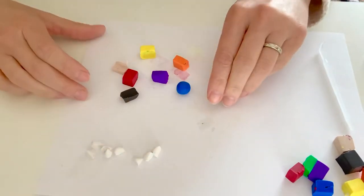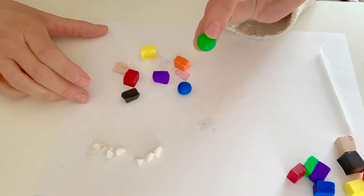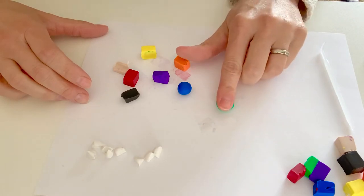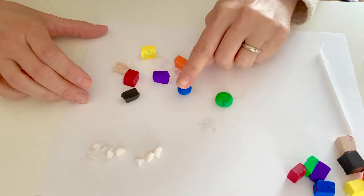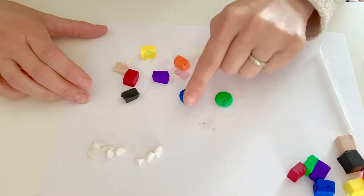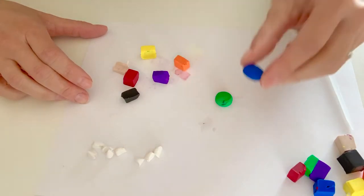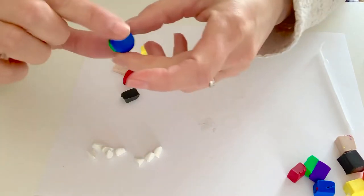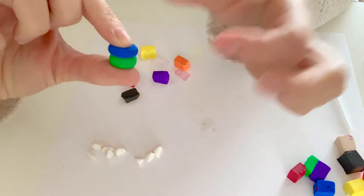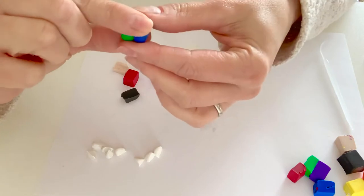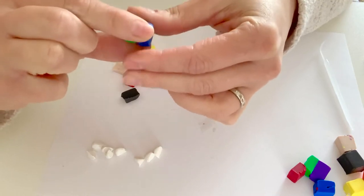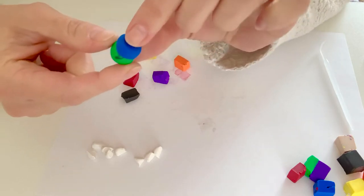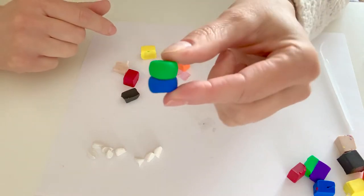So I'm going to take my green ball that I just rolled and I'm just going to press it with my finger just to flatten it a little bit. And I'm going to do the same with the blue just to flatten it a little bit. And then I'm going to stack those two on top of each other. And I'm just going to try to make them the same diameter.